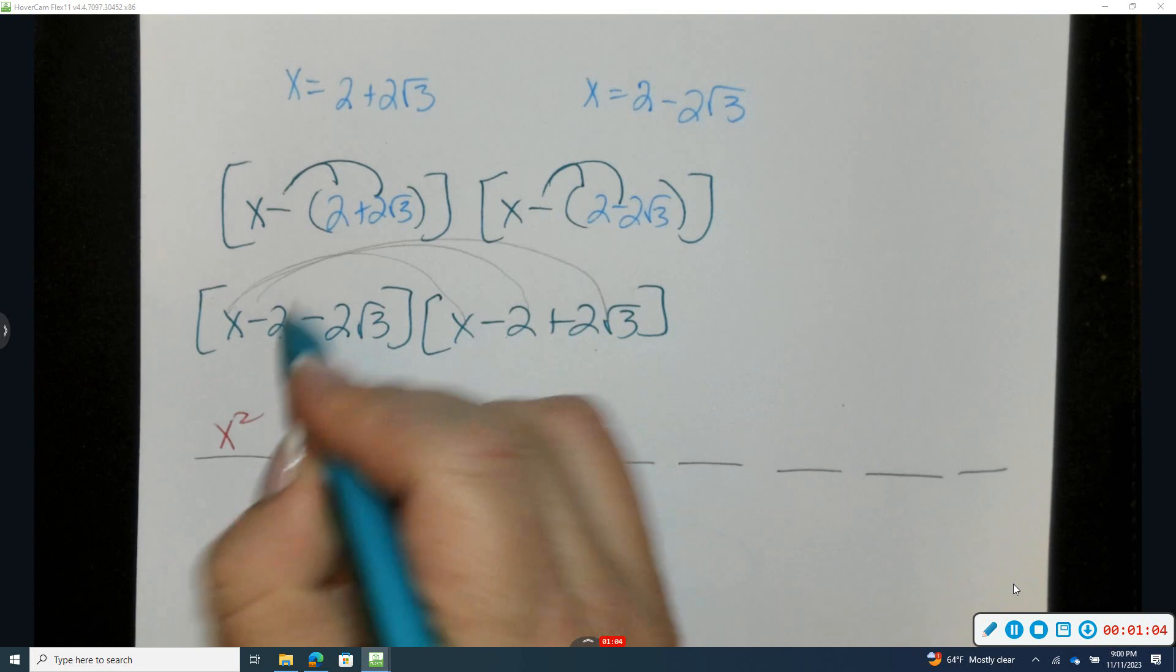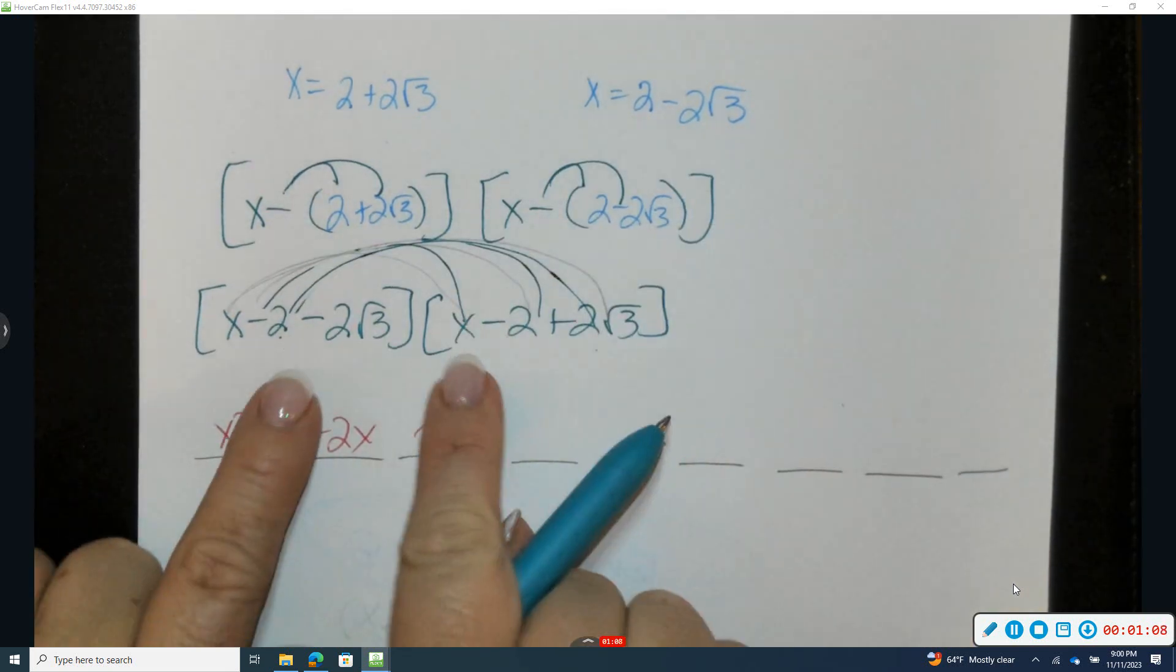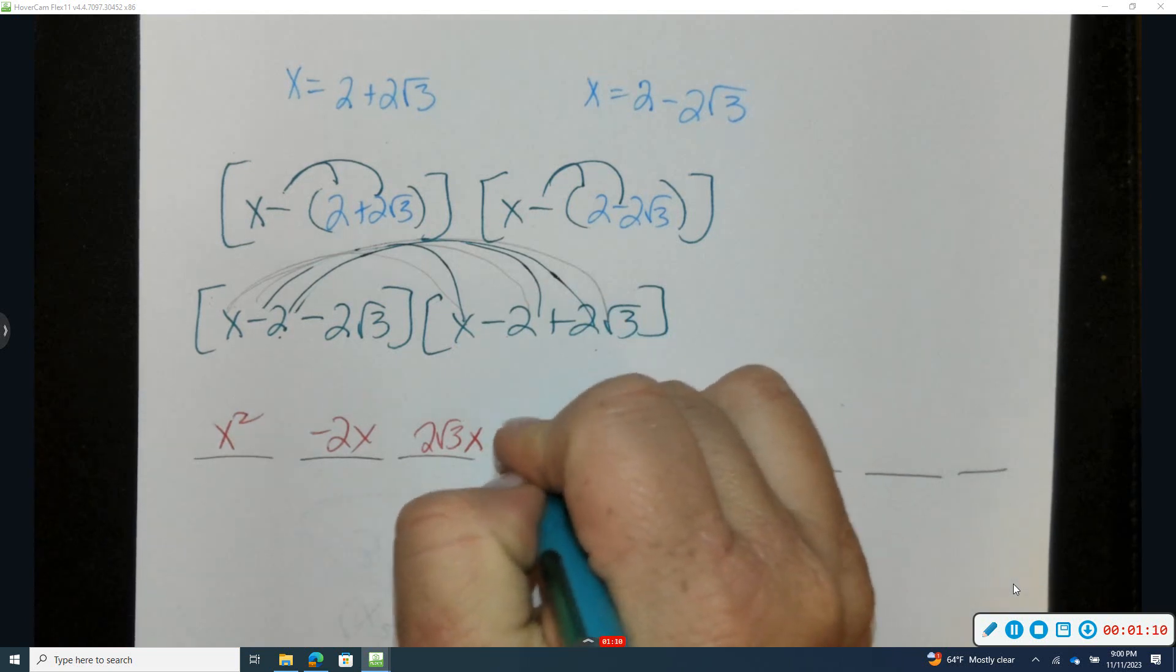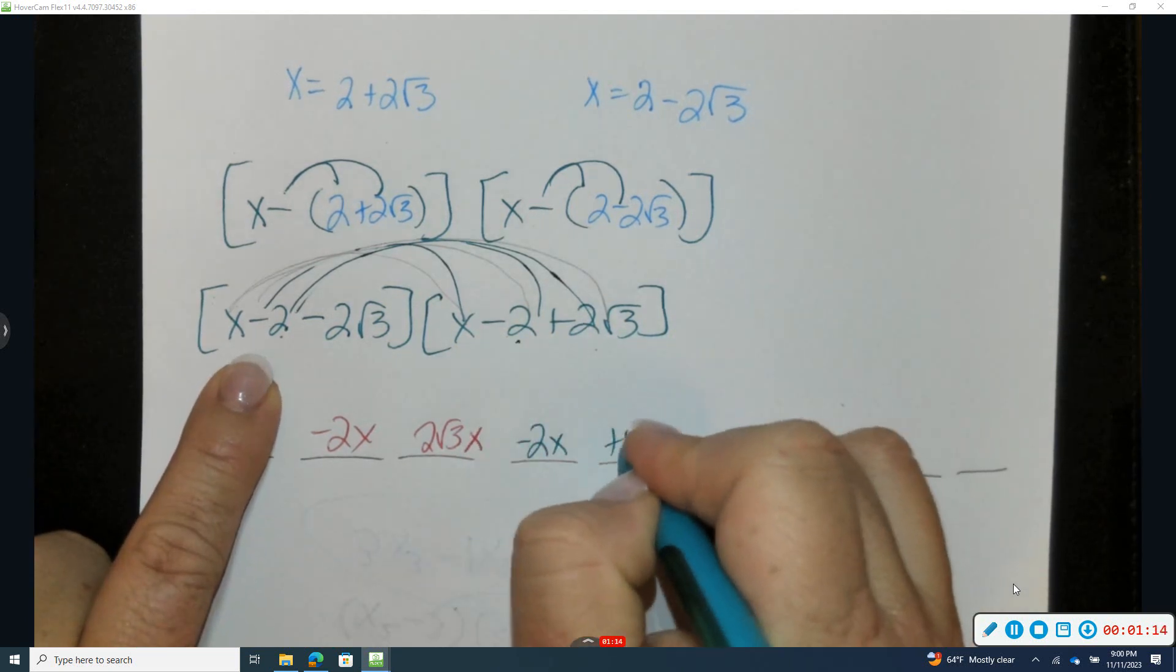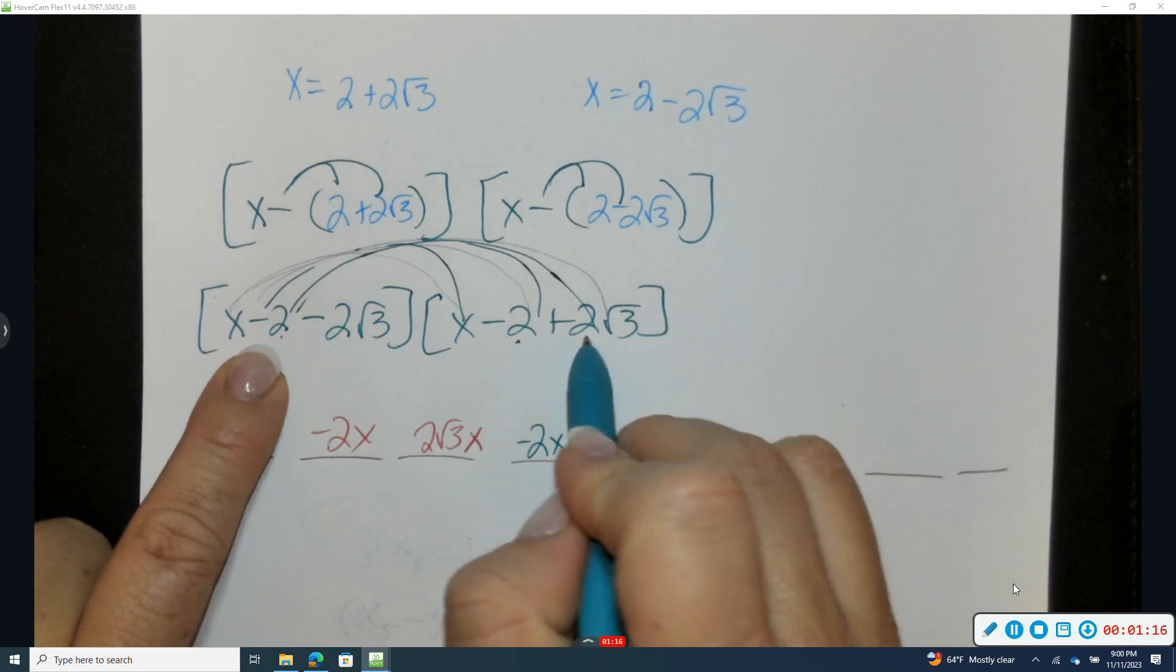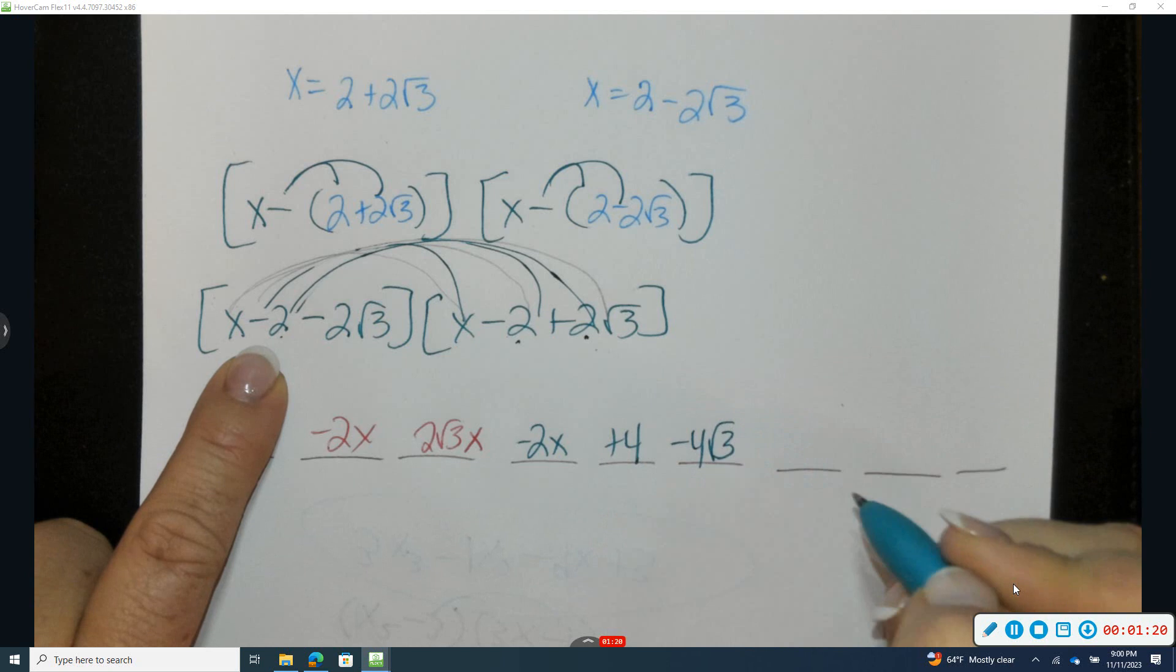Okay, we're going to do the same thing now with the negative 2 to each of these three terms. Negative 2 times x is negative 2x. Negative 2 times negative 2 is a positive 4. Negative 2 times 2 is a negative 4 with a radical 3.